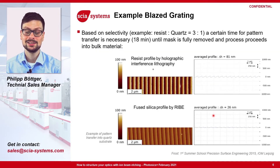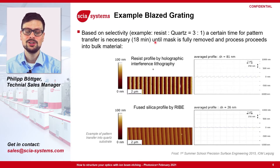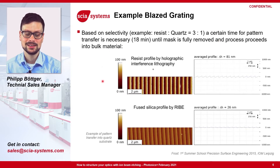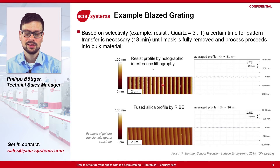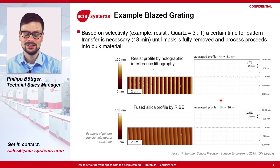You can also tune your process to be a non-proportional pattern transfer. On this slide you see an example of such a non-proportional pattern transfer. A set of parameters were chosen to achieve a selectivity between the photoresist and the quartz substrate of 3:1. Here you can see very nicely how this is used to produce a high efficiency blazed grating. The step height of the photoresist of 81 nanometers is tuned according to our selectivity to a step height of 26 nanometers.